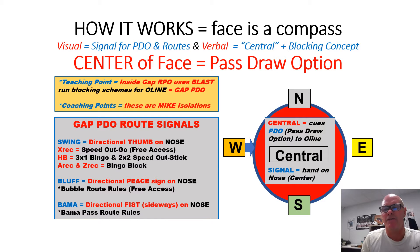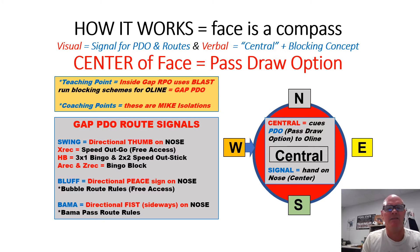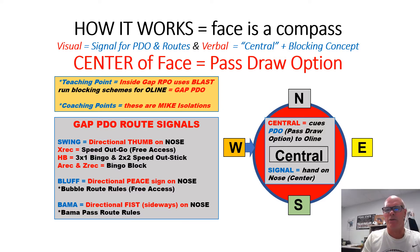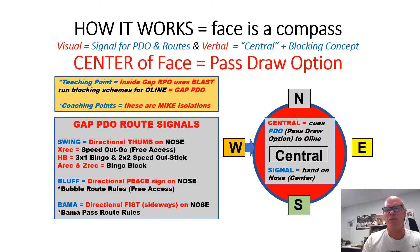That tells the offensive line they're going to use their pass-draw option timing — they'll pass set first, and then use bulls and blazers or blast blocking, where if they're combination blocking, they can climb after the pass-set to the next level. We're going to isolate the mic with three different ways. First, we're going to flat him — that's our swing route, signal thumb up. If we want to bluff him — fake block him and then run a route behind him — we use a peace sign to the center of the face. And if we're going to block him, we use our Bama, which is our fist sideways on the center of the nose.